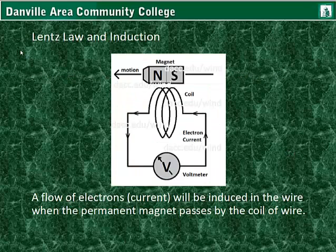An alternative to electrochemical sources is the generator. The generator was created by the understanding of electromagnetic induction, where a flow of electrons, or current, will be induced in the wire when the permanent magnet passes by.